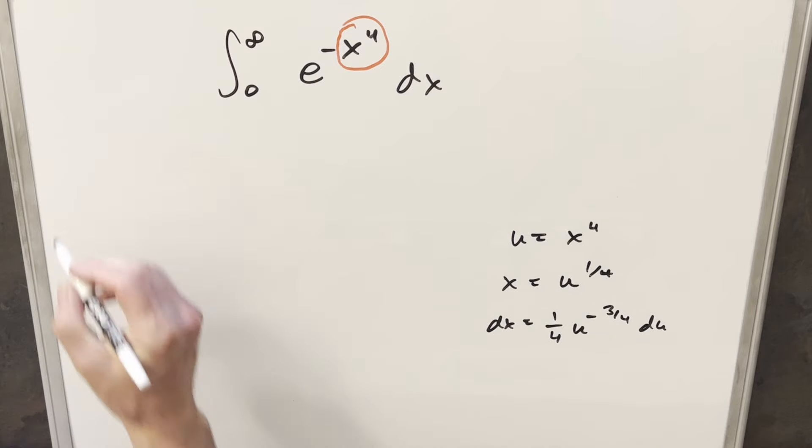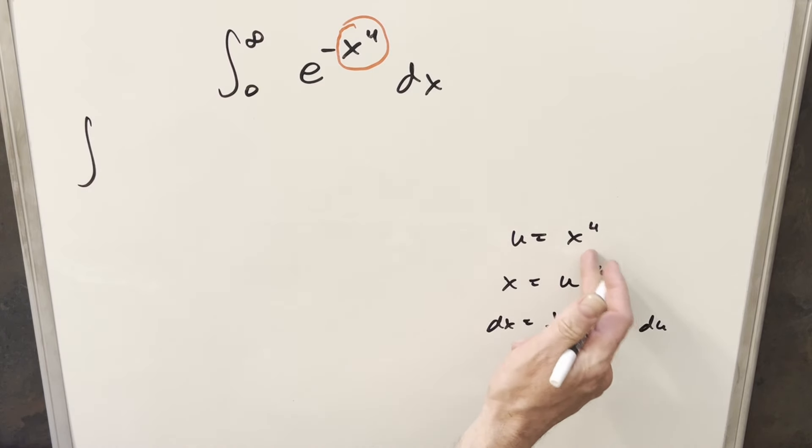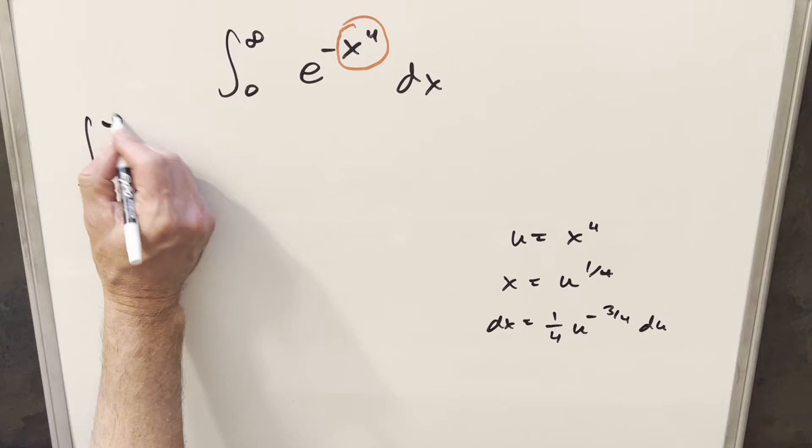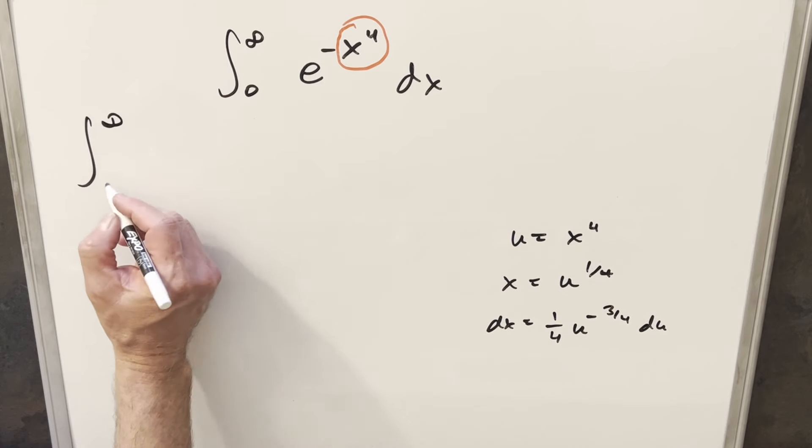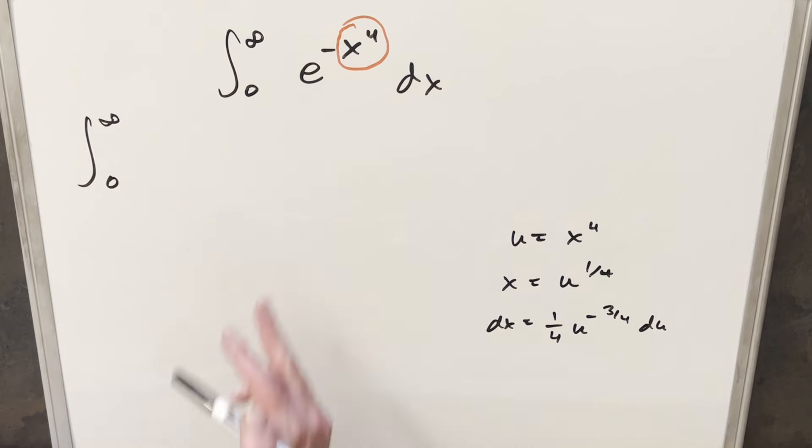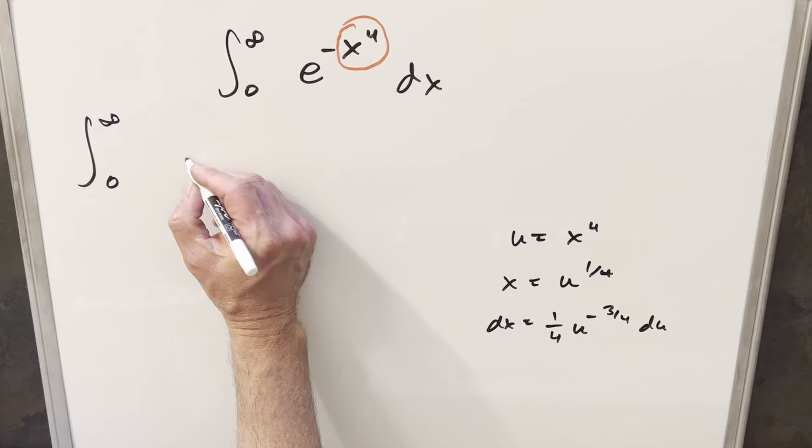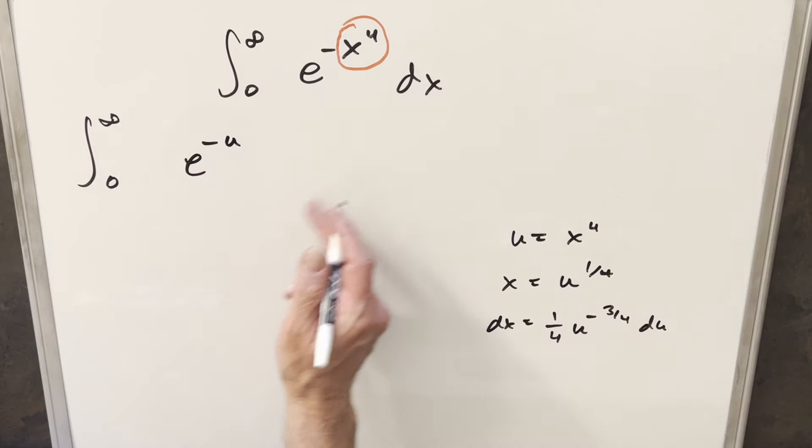So now let's just go ahead with this. First, looking at our bounds for infinity, when you have infinity to the 4th, that's still infinity. And then you plug 0 in, well our lower bound is still going to be 0. Then for this here, it's just going to transform into e to the minus u.